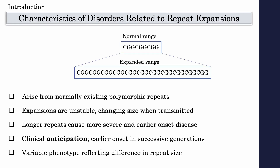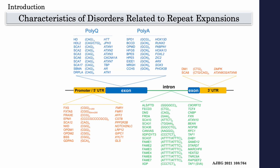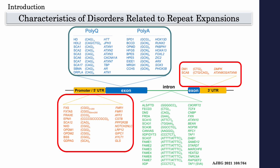Pathological repeat expansions arise from normal existing polymorphic repeats. They are unstable as they change their size between one generation to another, with longer repeats causing more severe and earlier onset of disease. Also, there is variable phenotype reflecting differences in repeat sizes. Overall, there are a few dozens of known pathological repeat expansion loci. These repeats can be found in coding regions, but also in non-coding regions, including introns and regulatory regions such as promoters.